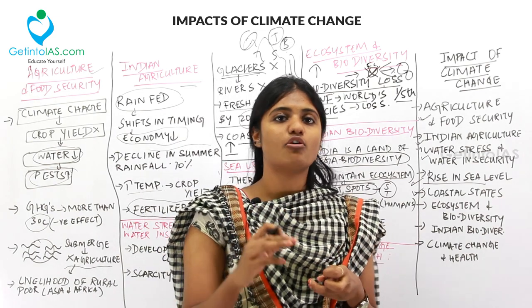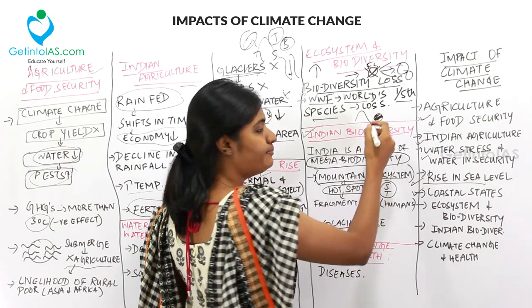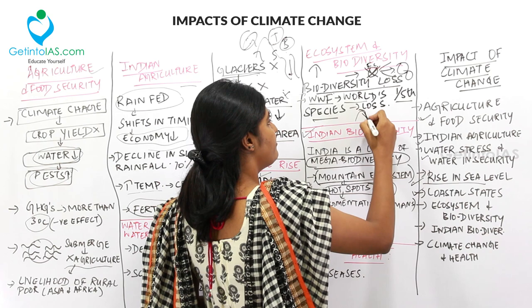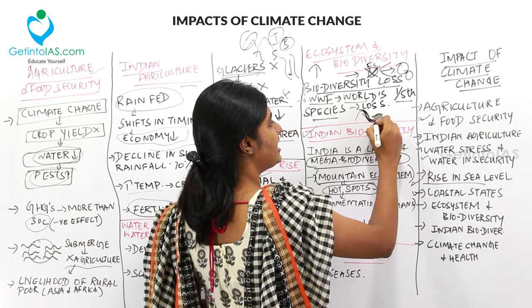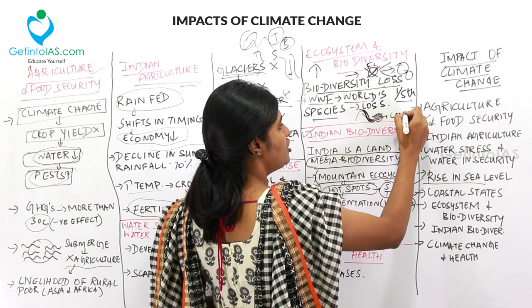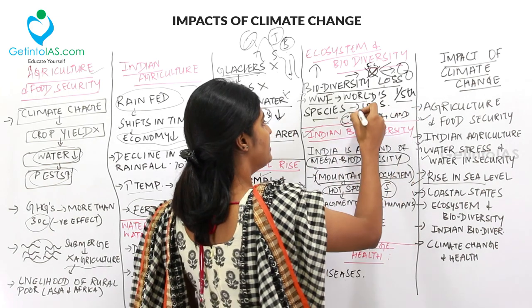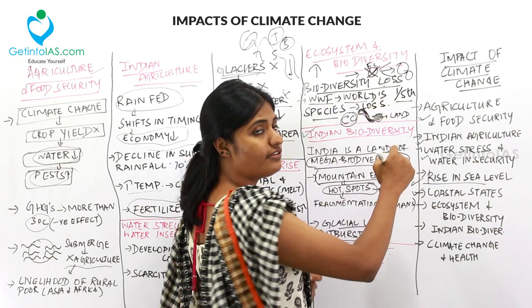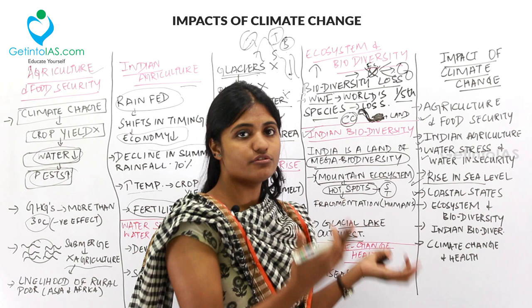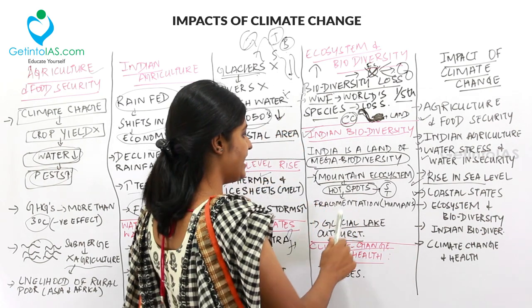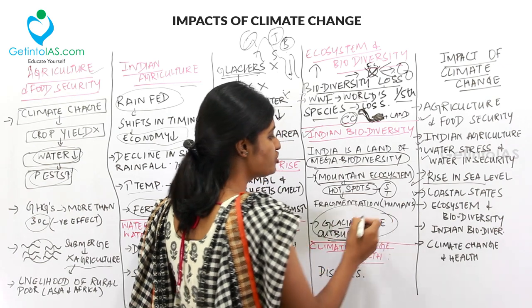Glacial lake outburst is also happening in many places. When there is a depression near a mountain and runoff fills it, forming a lake, the glacier above melts at a faster rate due to climate change, causing the lake to overflow. This is called a glacial lake outburst, and it is occurring in many places.